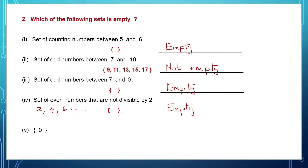The next question: as you can see, inside this set we have 0. That means there is one element inside that set. So it's not an empty set — it is not empty. Though you see 0 inside, 0 is still one element. So this is not an empty set.